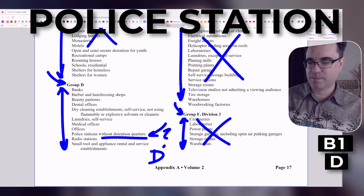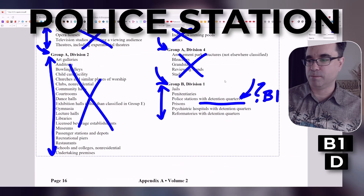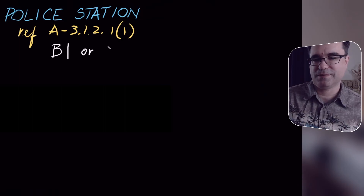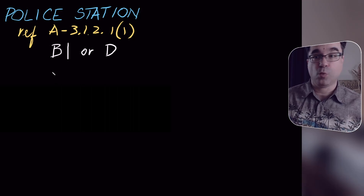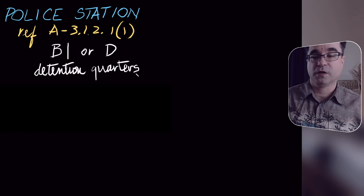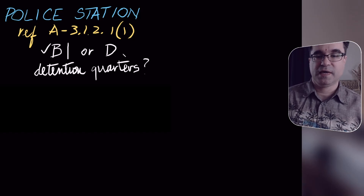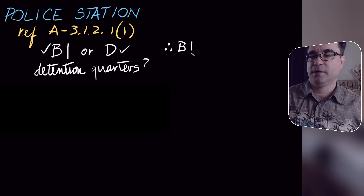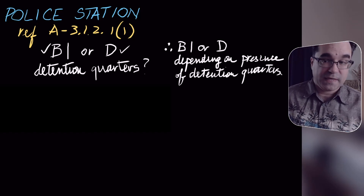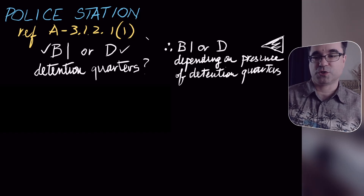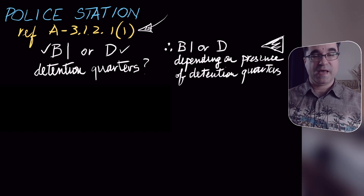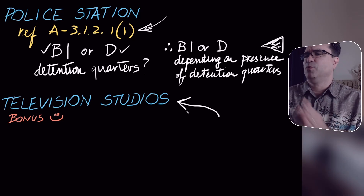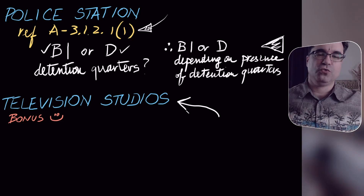So we have a maybe with D and a maybe with B1. We have two options, and what is the difference? It has to do with whether or not detention quarters are present. If they are present, it's B1. If there are no detention quarters, then it's D. I would accept as an answer B1 or D depending on whether or not there are detention quarters. This is our final answer, which is a good answer because it also provides the references used. I have another bonus example, but I'm going to clip this into the next video — example number two — which will be linked in the description below.